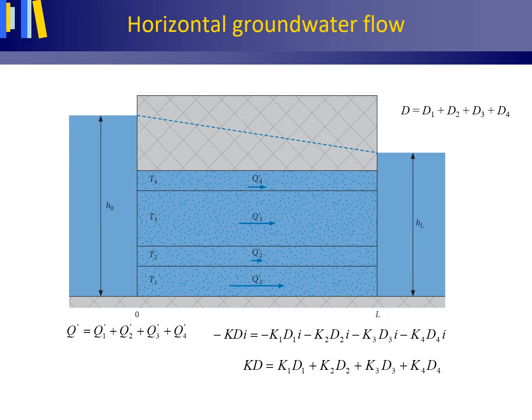We can insert Darcy's law, both for the aquifer as a whole and the separate layers, into this continuity equation. We obtain this equation. Dividing by the constant value of minus i gives the following end result: in a confined aquifer consisting of horizontal layers, the KD value for the aquifer as a whole equals the sum of the KD values of each layer.